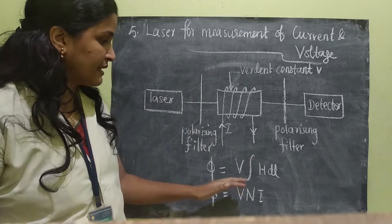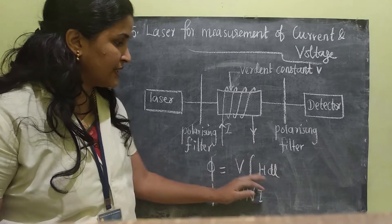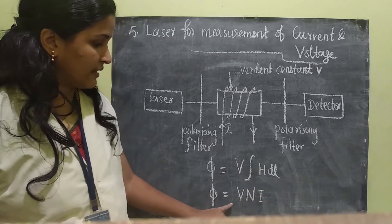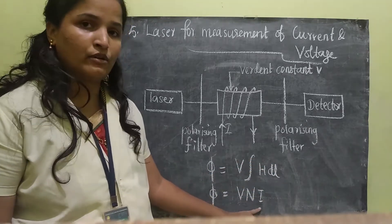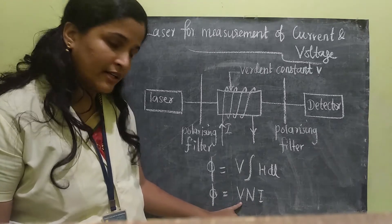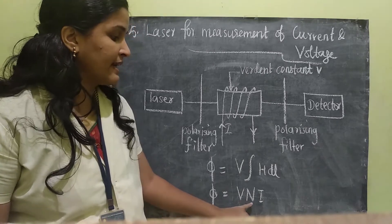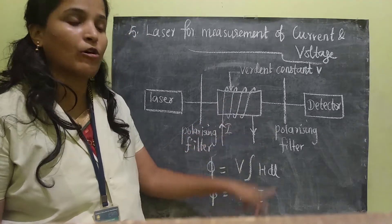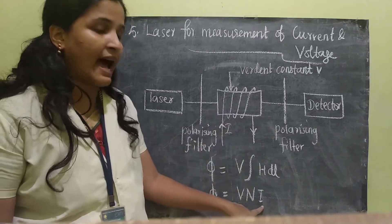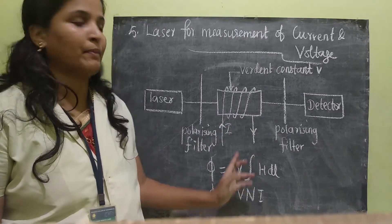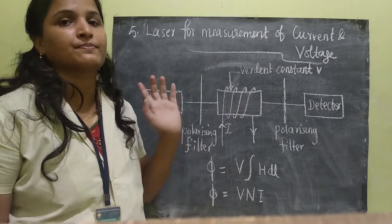When you integrate it, we get V·N·I, where V is again the Verdet constant, N is the number of turns of the coil, and I is the current applied.